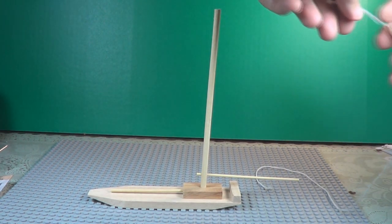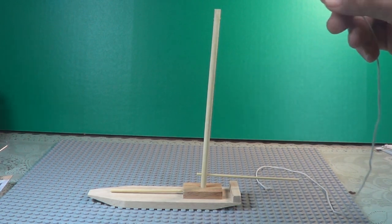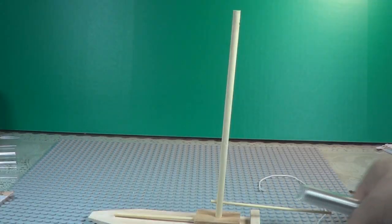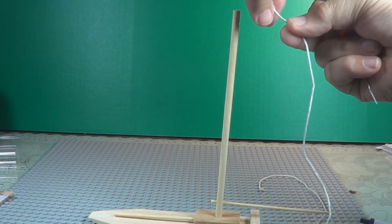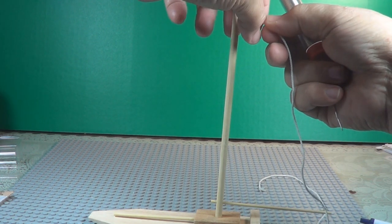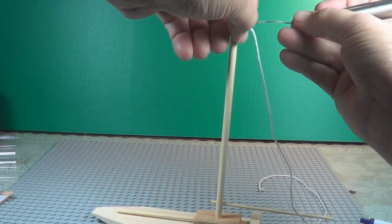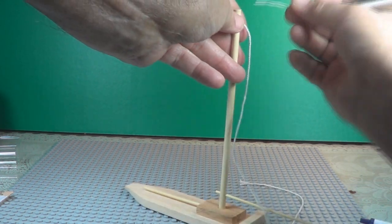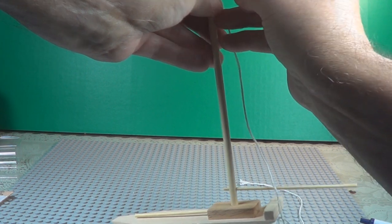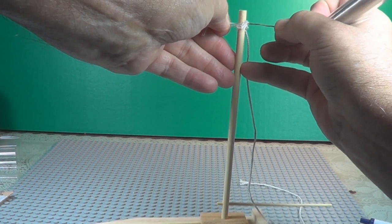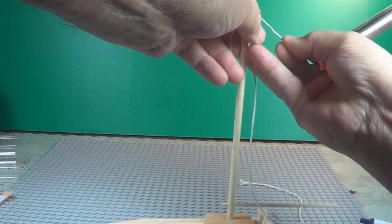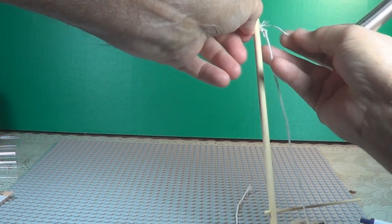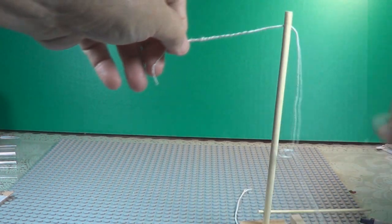Okay, let's put the string on for the sails. Goes through that hole on the top of the mast, and something to poke it through with. Poke it through so you can get enough of it to pull it. There we go.